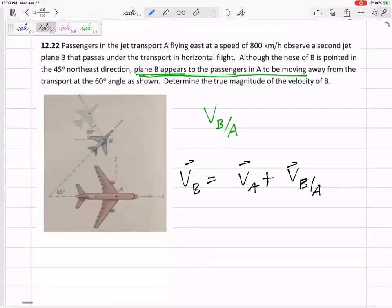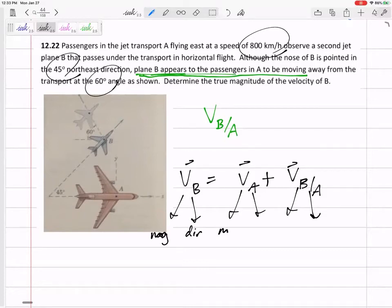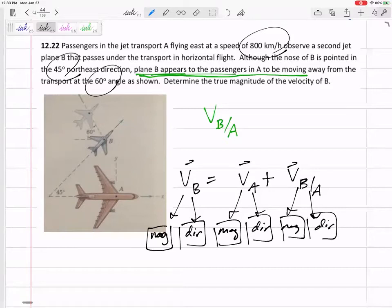And so I need to decide, okay, that 800 goes with which term? That 45 degrees goes with which term? Sometimes I like to do this just to remind myself I've got a magnitude and a direction, magnitude and direction, magnitude and direction—try to plug in all six of these things as best I can. So let's start with this 800. Where does that 800 go?